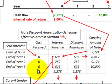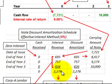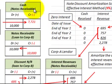To summarize the amortization schedule: since there is zero interest on this note, there is zero cash received. However, we recognize interest revenue based on the amortization of the total discount of $2,278 over the life of the note.